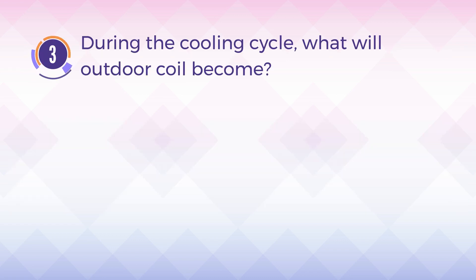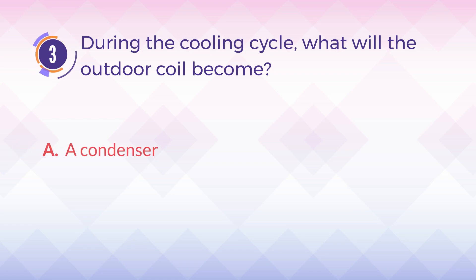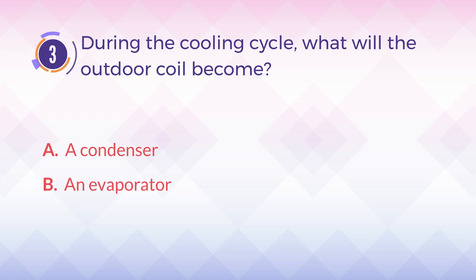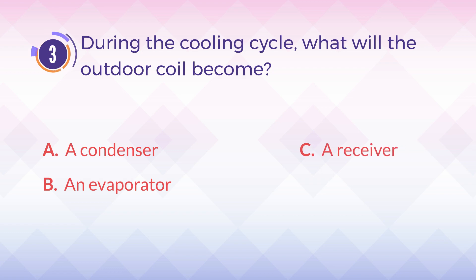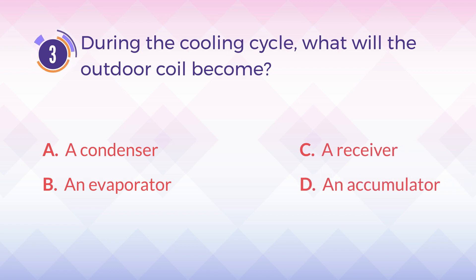Number 3. During the cooling cycle, what will the outdoor coil become? A. A condenser. B. An evaporator. C. A receiver. D. An accumulator.